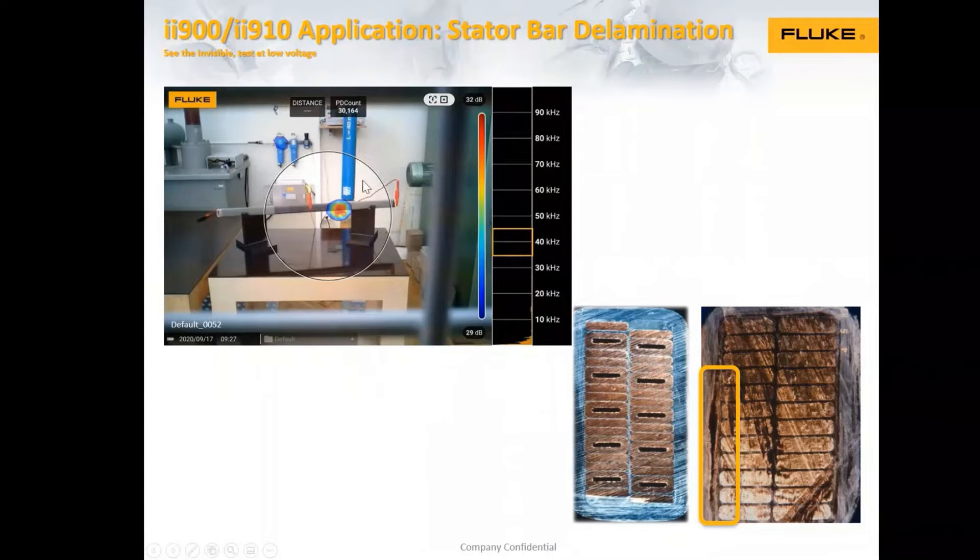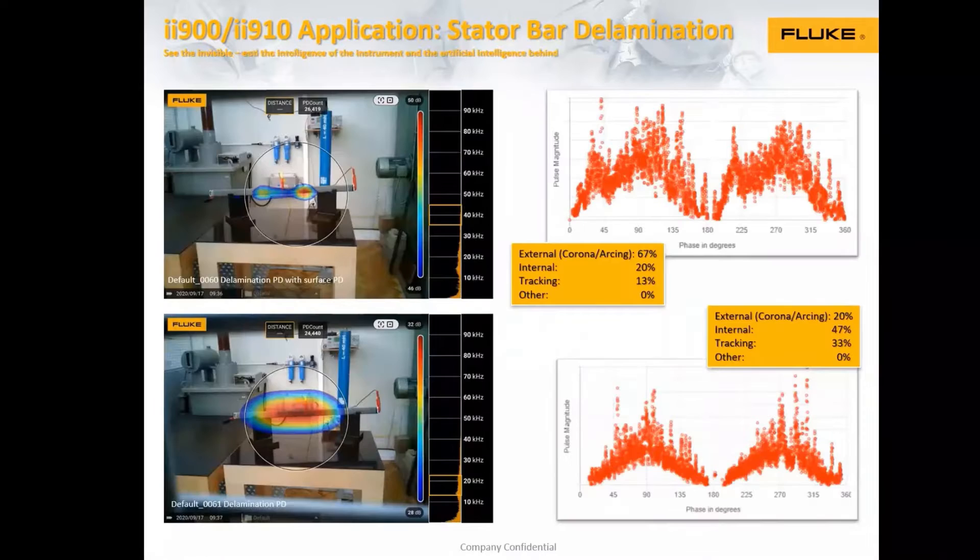I like this example here very much, because we see here the PD, and at the same time, we see here an armature that is leaking. This one here is measured with the acoustic camera at the same time. It's not only PD that we see, and we made a test at higher voltage, and we got this figure here, and we got this figure here at the same voltage.